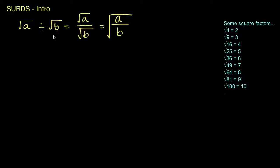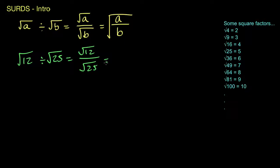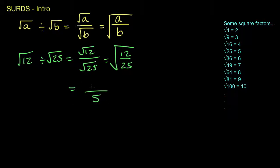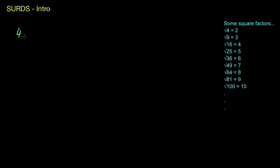Before finishing, let's look at division of surds. The square root of a divided by the square root of b equals the square root of a over b, or the square root of (a/b). An example: the square root of 12 divided by the square root of 25 can be written as the square root of 12 over 25. To simplify, the square root of 25 is 5, so we have something over 5. For the 12, the square root of 4 times the square root of 3 gives 2√3, so the answer is 2√3 over 5.